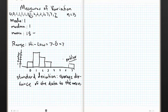If I wanted to figure out the standard deviation of this data set, I could figure out the distance from 0 to 1.8, from 0 to 1.8, from 1 to 1.8, from 1 to 1.8, and so on. Take all those differences, add them up, and divide by the number of data I have. Unfortunately, it's not as simple as that.